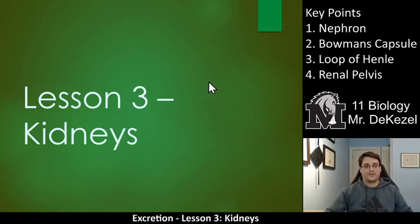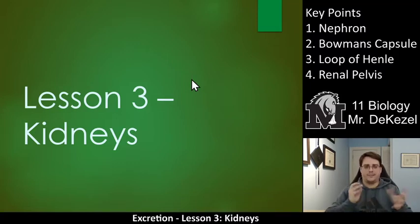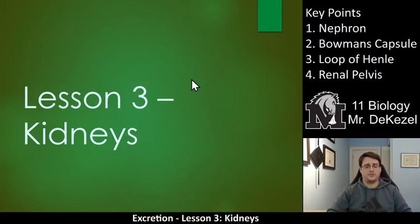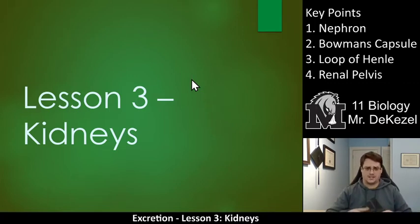Hello, biology class. Welcome back to another lecture. This is lesson three of the excretion unit, titled kidneys. We're going to talk about, at a microscopic level, what happens within the kidneys. We've talked about the urinary system and lots of different parts of the kidneys already. But how does the blood actually filter through the kidney? How does it separate into blood and urine and then get rid of it? That's what we're going to talk about in this lesson.